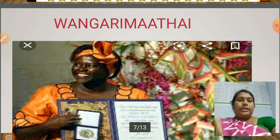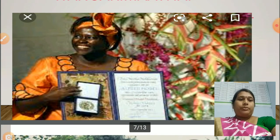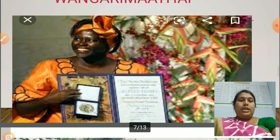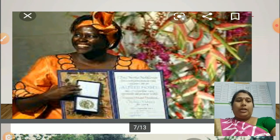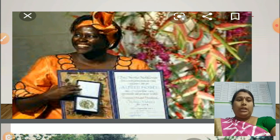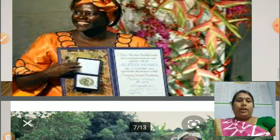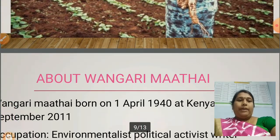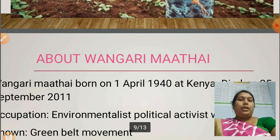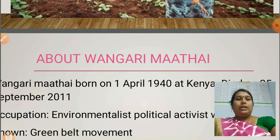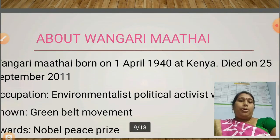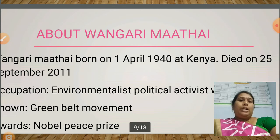Next, look at this picture. Do you know about her? Who is she? I think you know about her. She is Wangari Mate, an African woman — an environmental activist. Today in our lesson, we learn about her, about Wangari Mate.